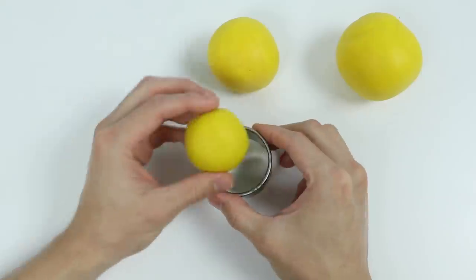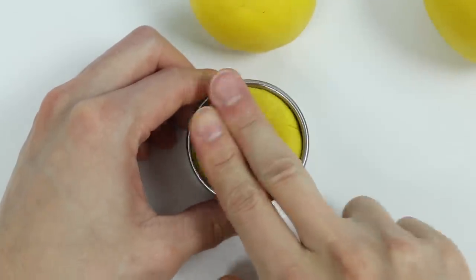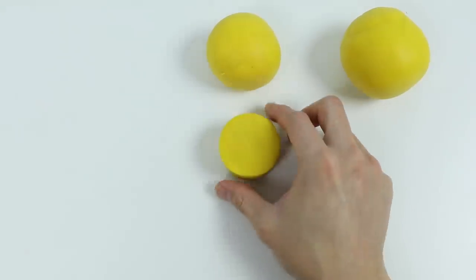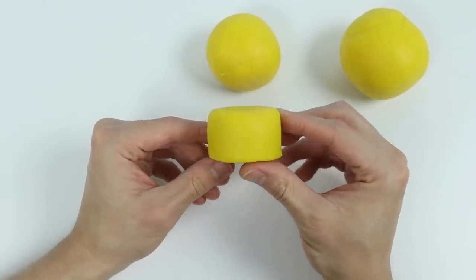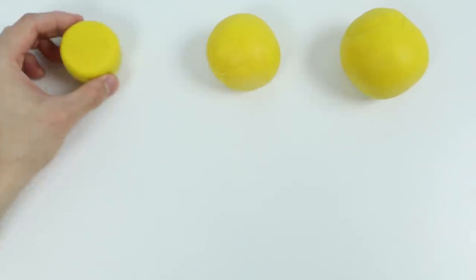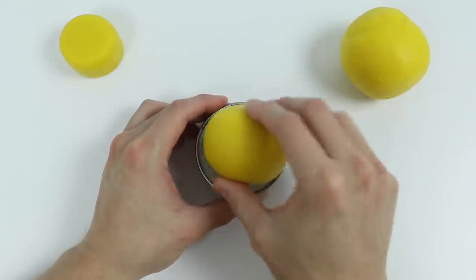By making a yellow cake, we'll use this cutter to make the smallest layer. Perfect! This cake layer will go on top. Now let's use this cutter to make the middle layer. Give me a minute.